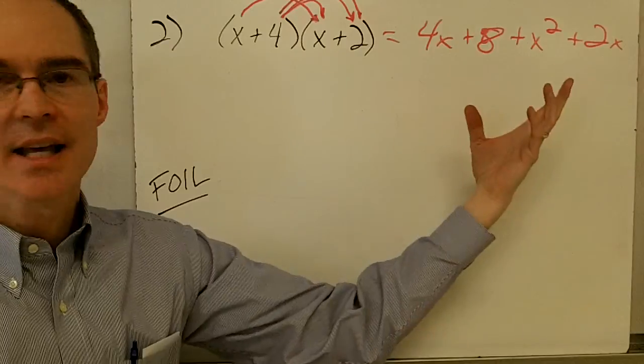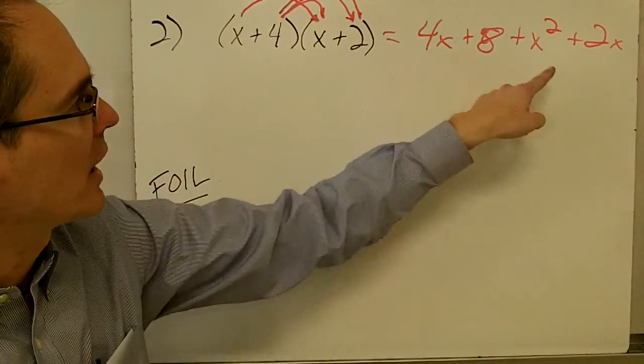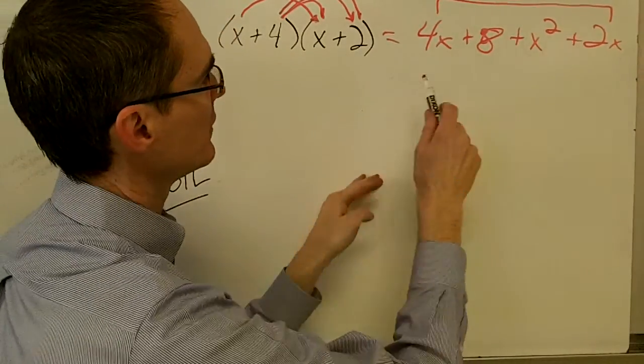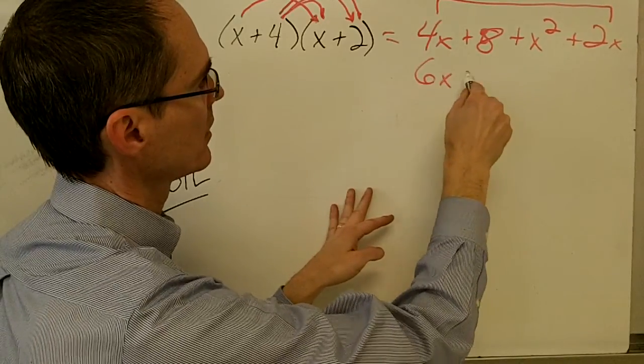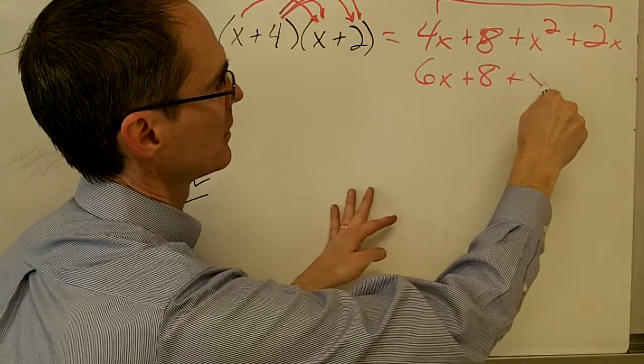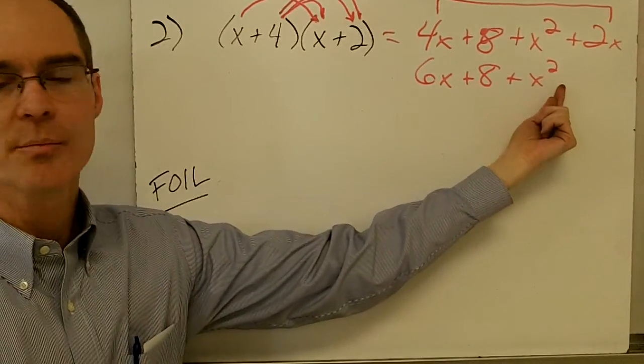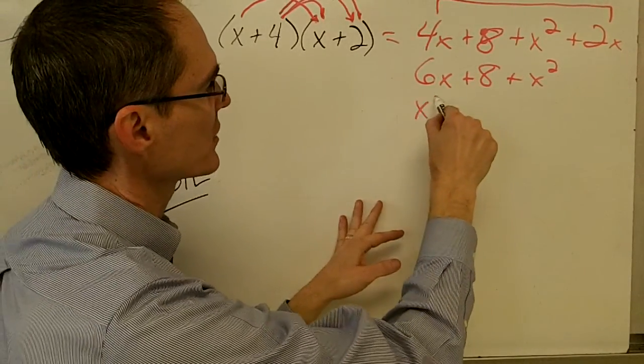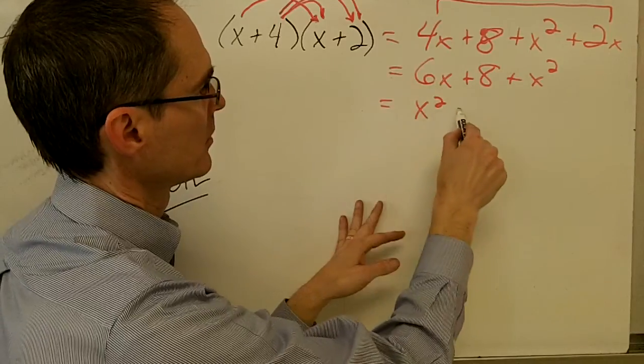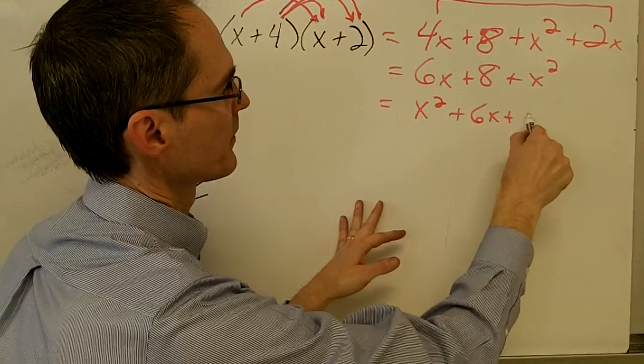And then, again, if I collect up my like terms, in this case, I only have two like terms, my x terms. So that's going to be 4x and 2x is 6x plus 8 plus x squared. And typically, you write it with the highest exponent term first. So I would rewrite this as x squared plus 6x plus 8.